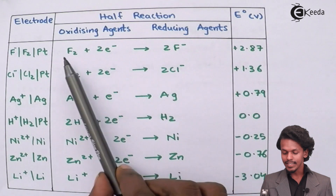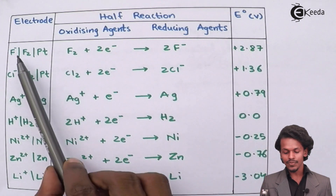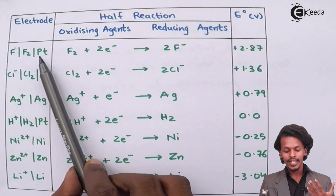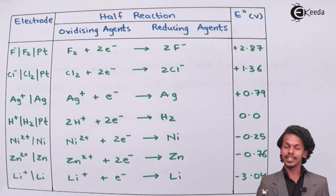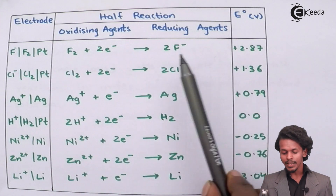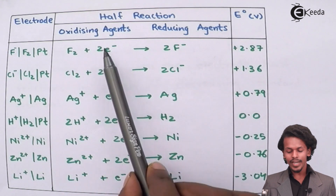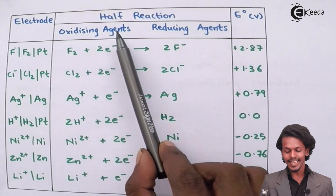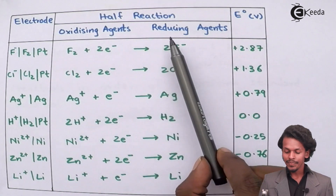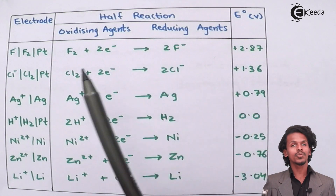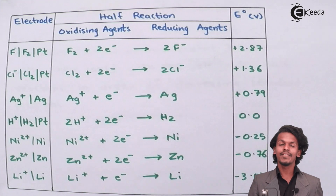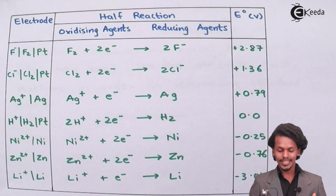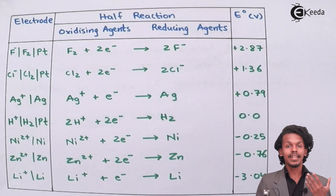The value of +2.87V corresponds to the fluorine electrode. Since fluorine is a gas, an inert electrode — platinum — is used. In this half-reaction, F₂ accepts 2 electrons, so F₂ is acting as the oxidizing agent while 2F⁻ is acting as the reducing agent. The electrochemical series is effectively divided into two sides: oxidizing agents and reducing agents.